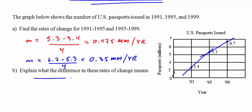So that's what I just described with the difference in these rates means we're issuing more passports each year but at a slower rate of increase.